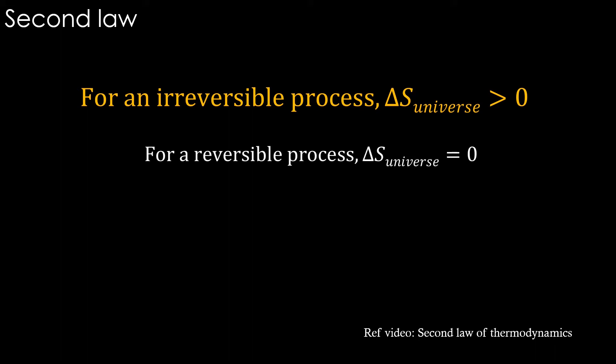Now, according to second law, the entropy change of the universe or the total entropy change of the system plus surrounding is greater than zero in a natural process and equal to zero in a reversible process. Total entropy change for a process cannot be negative. Note that it doesn't say that entropy change cannot be negative for the system alone or for the surrounding alone. It only says that the total entropy change cannot be negative.